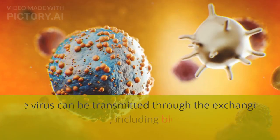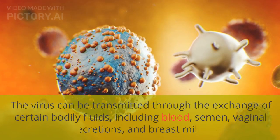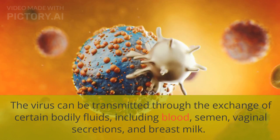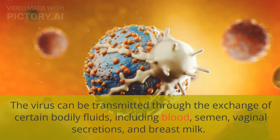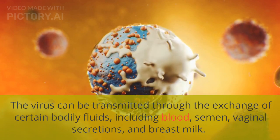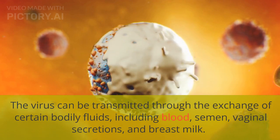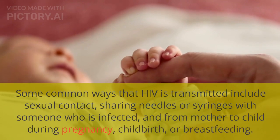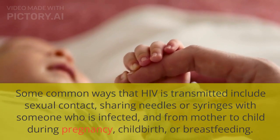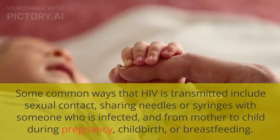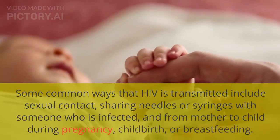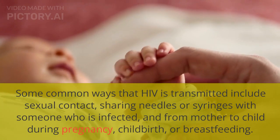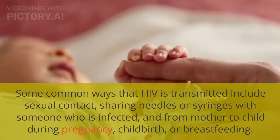The virus can be transmitted through the exchange of certain bodily fluids, including blood, semen, vaginal secretions, and breast milk. Some common ways that HIV is transmitted include sexual contact, sharing needles or syringes with someone who is infected, and from mother to child during pregnancy, childbirth, or breastfeeding.